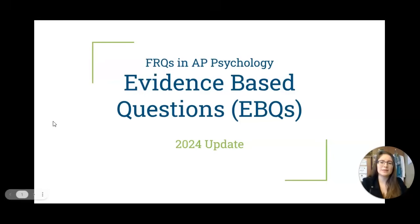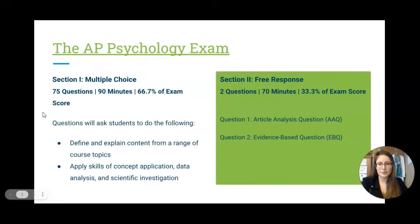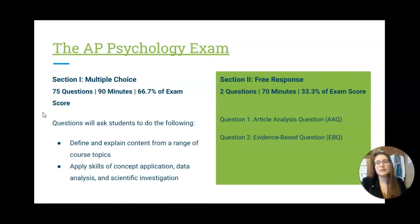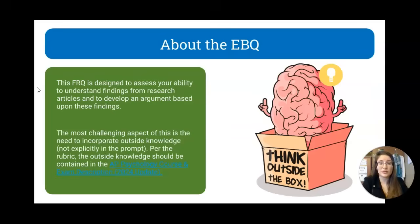I promise this is tons easier. As we talked about, the AP Psychology exam comprises two parts: the multiple choice section and the free response. During the free response section, you are going to get both of your questions at the same time, and you have 70 minutes to complete it for about a third of your AP exam score.